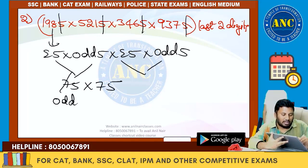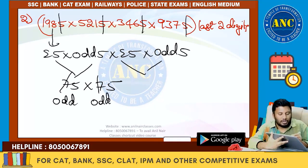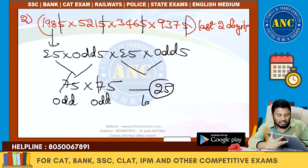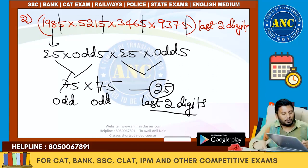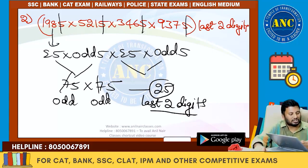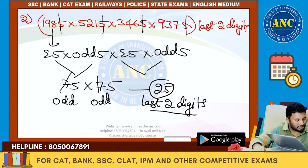7 is odd, and here also it is odd. Odd 5 into odd 5 – last two digits is 25. Odd 5 into odd 5 – last two digits is 25. With this second example it should be extremely clear to you. I hope it is clear.